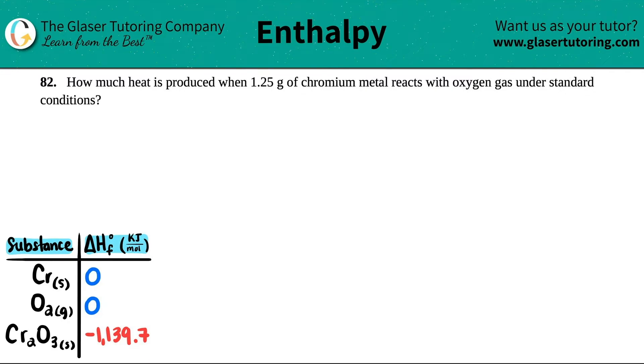Number 82. How much heat is produced when 1.25 grams of chromium metal reacts with oxygen gas under standard conditions? Sounds like they're talking about a balanced equation, chromium reacting with oxygen. They said under standard conditions and they're talking about heat, so that means they want us to find the enthalpy values in the back of a textbook. That's exactly what I did.